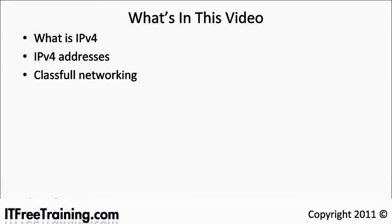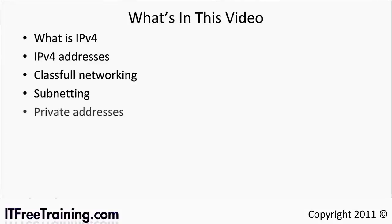When IP version 4 was first developed they introduced the concept of classful networking. Even though this concept has become deprecated over the years, it is still important to understand how it works to have an understanding of IP version 4. Next I will look at the process of subnetting. Subnetting is taking a large network and dividing it up into smaller parts. Finally I will take a look at private addresses, which are IP addresses that you can allocate as you see fit inside your organization.